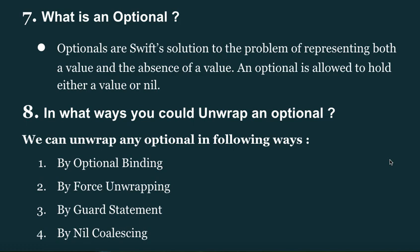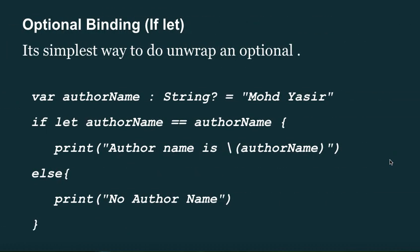In what ways can you unwrap an optional? You can unwrap an optional in the following ways: number one, by optional binding; number two, by force unwrapping; number three, by guard statement; number four, by nil coalescing. Optional binding using `if let` is the simplest way: `var authorName: String? = "Mohd Yashir"`. Then: `if let authorName = authorName { print(authorName) } else { print("no author name") }`.